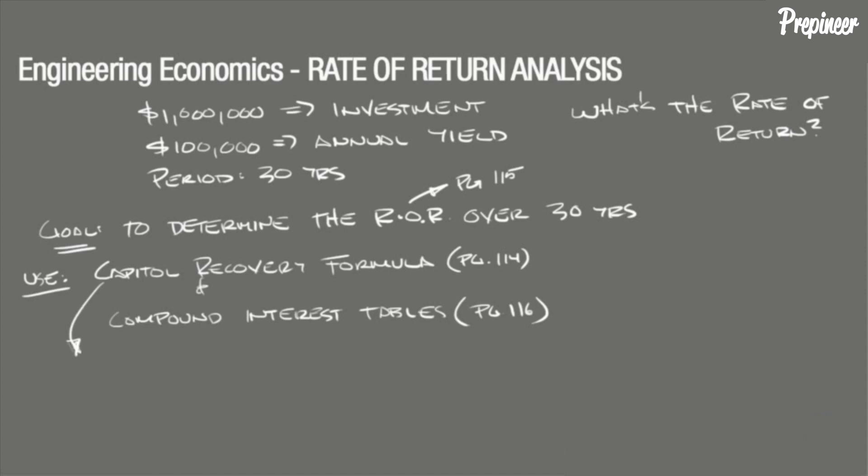The capital recovery formula written in functional notation for a uniform amount per interest period is A equals P times A over P IN, where the term A over P IN can be defined using the given values for interest and the period, and the compound interest table starting on page 116 of the NCEES Supplied Reference Handbook.